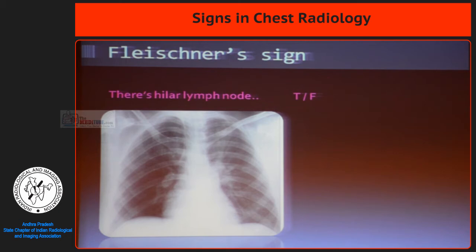When a major pulmonary vessel is obstructed by a massive thrombus, the pulmonary artery will be focally dilated proximally, and distally it will be collapsed or constricted. What does it mean? We can derive another two signs from this radiograph itself.